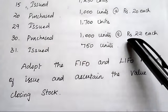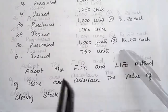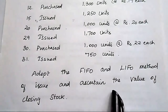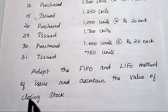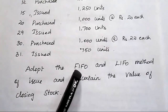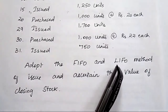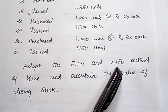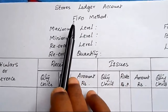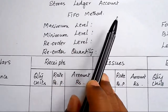With this information, you have to prepare the store's ledger adopting both the FIFO and LIFO methods of issue and ascertain the value of closing stock. Now I am going to prepare the store's ledger account according to the FIFO — First In, First Out — method.